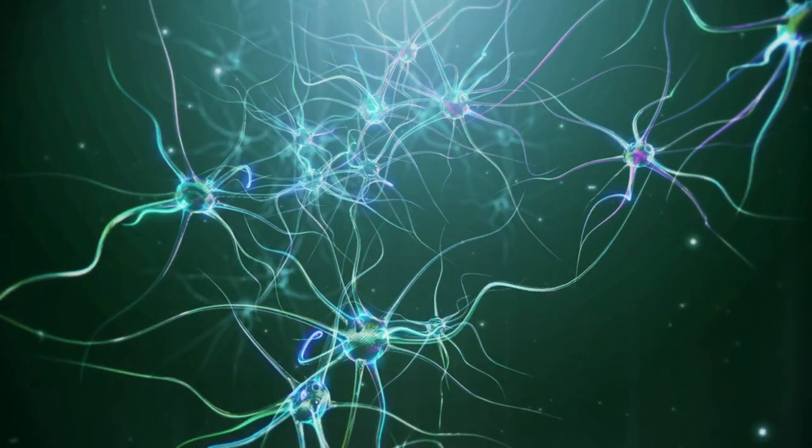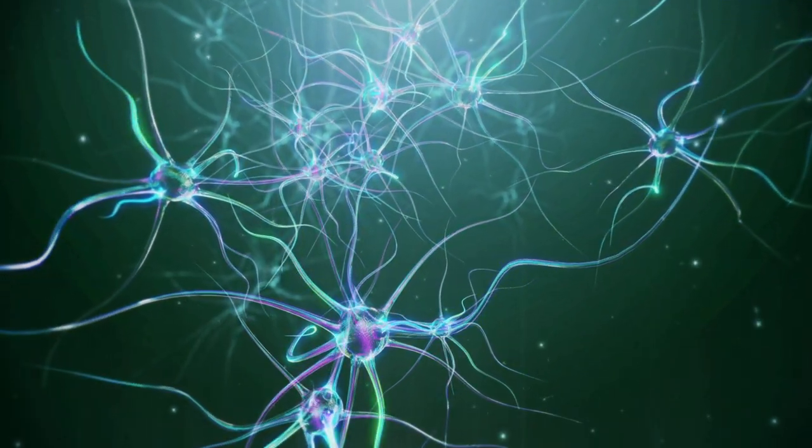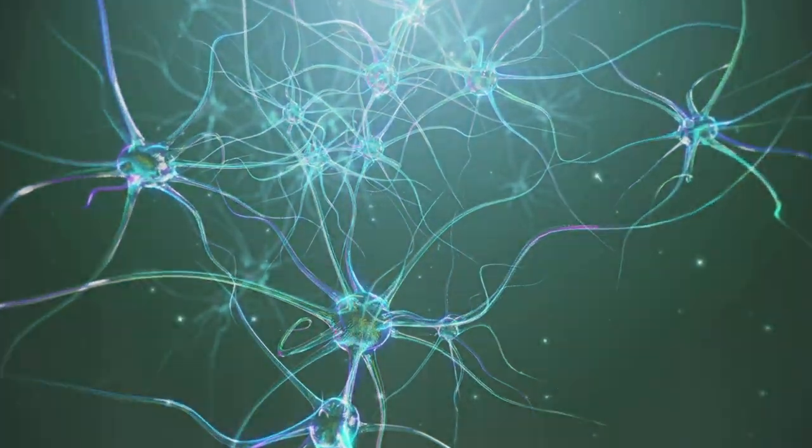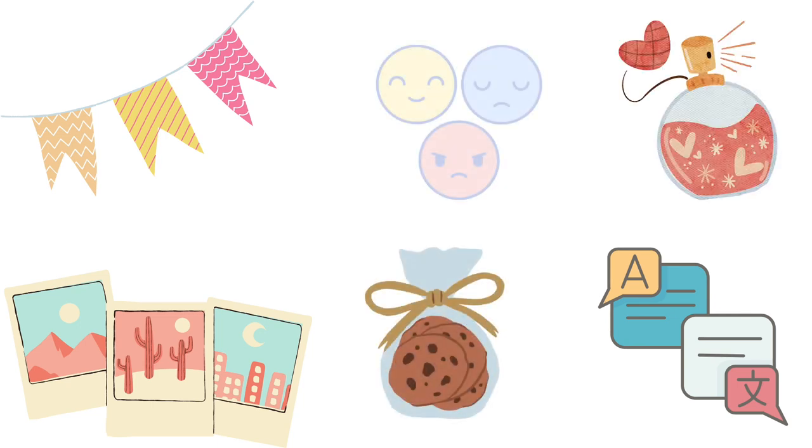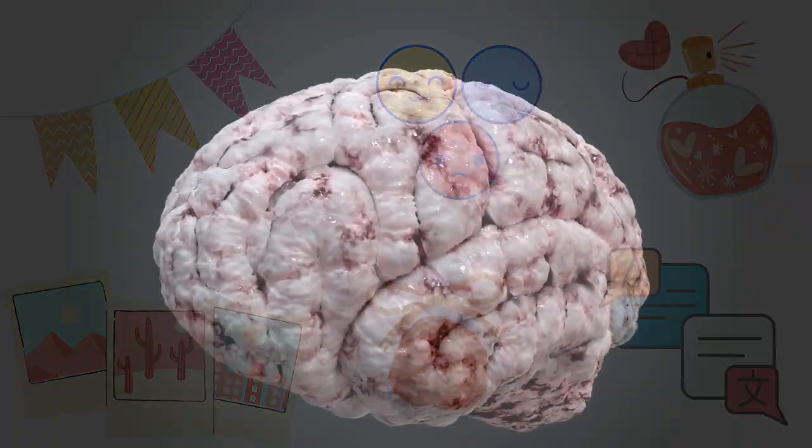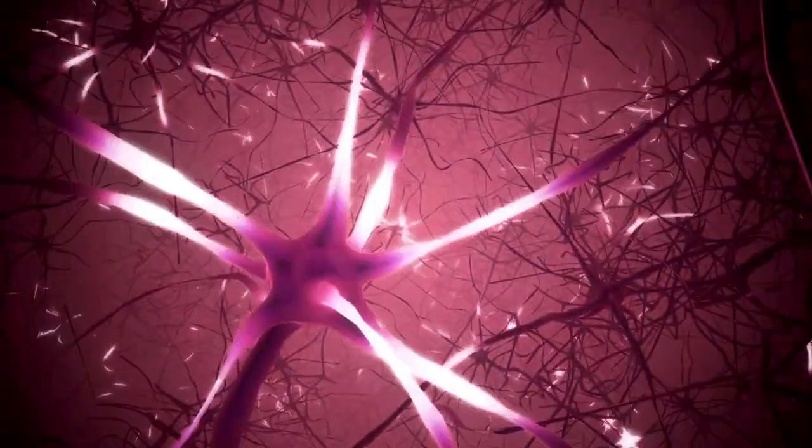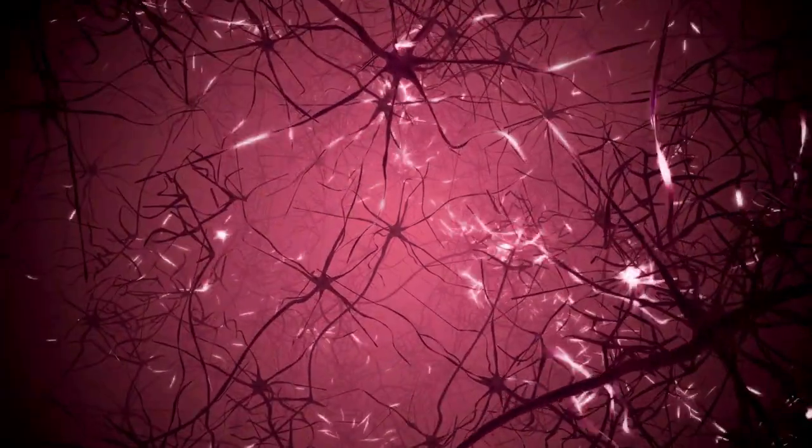Every time you learn something, neurons take that information and share it with other neurons through these connections. All your information of events, words, images, smells, tastes, emotions, etc., are stored as memories in collections of neurons in different regions of the brain.